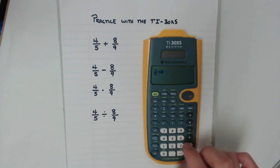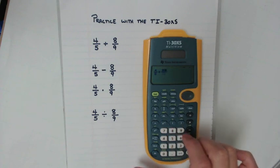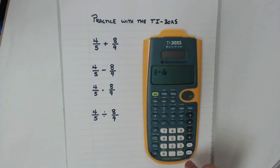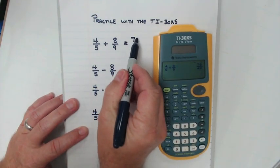Plus, hit my fraction button again, which is right here. Eight, move this down. Ninth, and then I can hit enter. And I get 76/45.